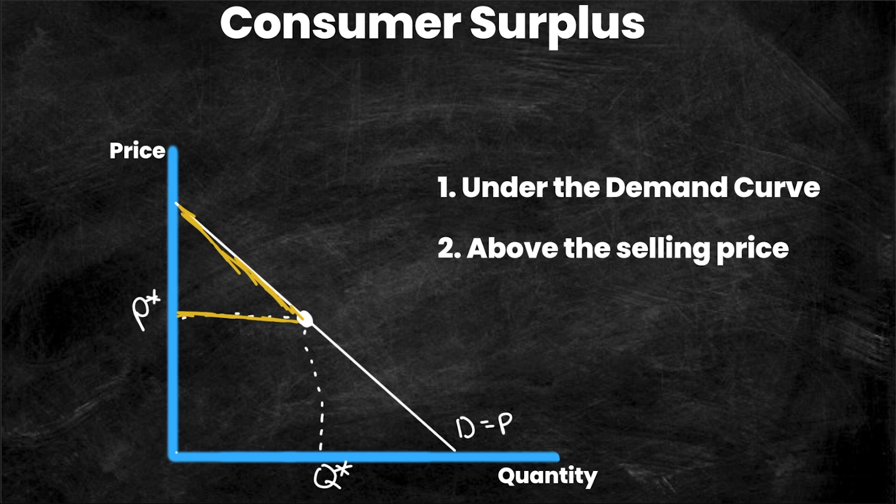So it must be above the selling price and below the demand curve. So we end up having this yellow triangle right here. And this is below the demand curve. The demand curve is right here. It's above the selling price. And this would be our consumer surplus. So on a graph, consumer surplus is this triangle below the demand curve above the selling price. And it's all based on the value that people place on their goods.